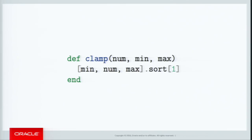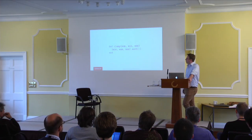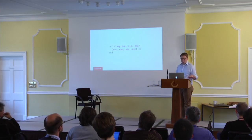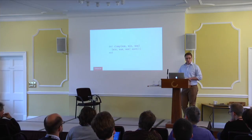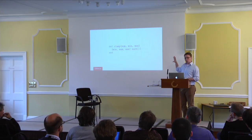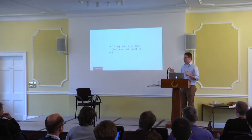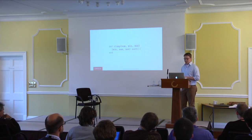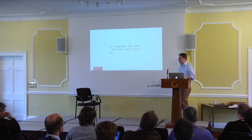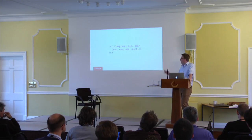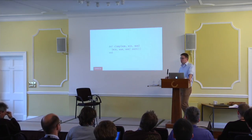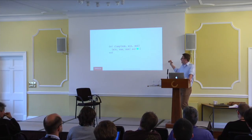This is an implementation of a clamp routine from the Photoshop processing library. The way they've chosen to implement it is by creating an array literal with the values, sorting it — which produces a new sorted array — then taking the middle element at index 1. It's a valid implementation, but not how you'd write it if you were aiming for performance. This routine is used for clamping pixel values, called many times per pixel in potentially very large files. They've used high-level operations — array constructor, sort, array indexing — all method calls in Ruby.